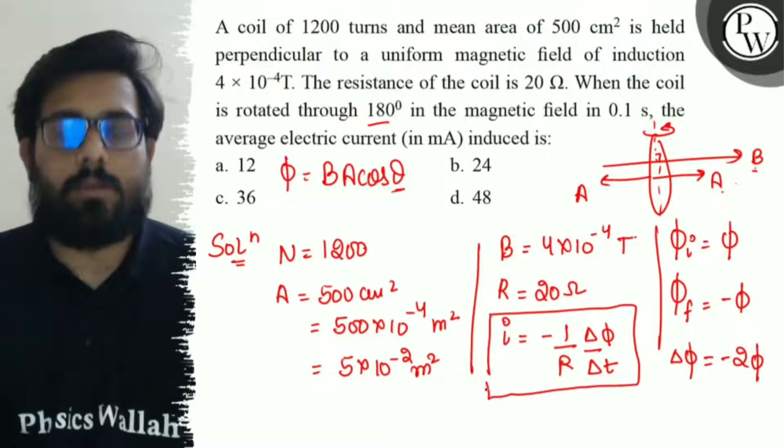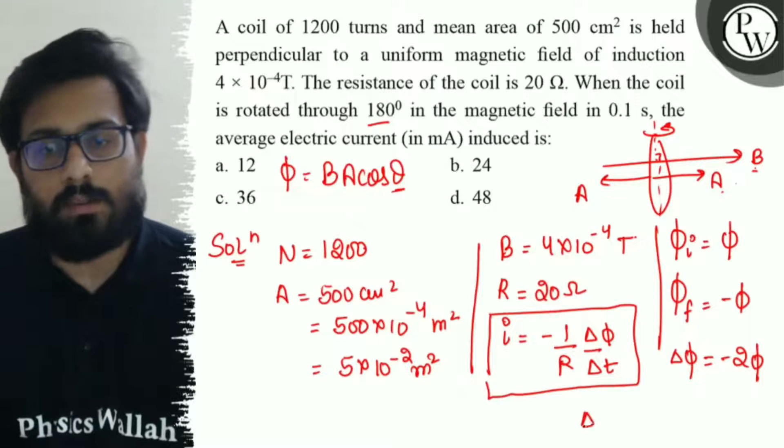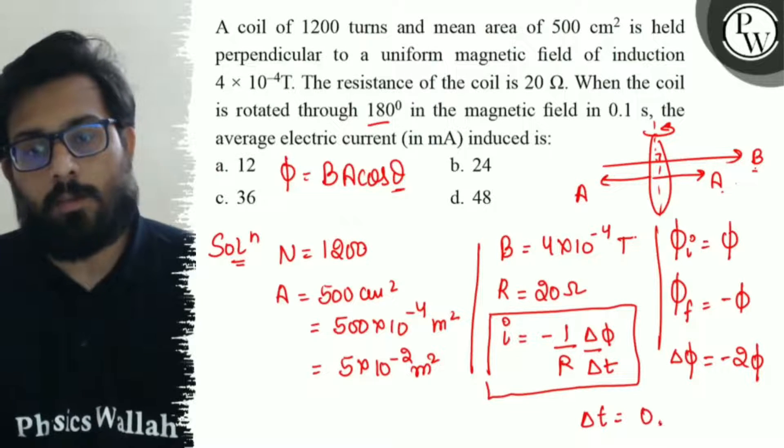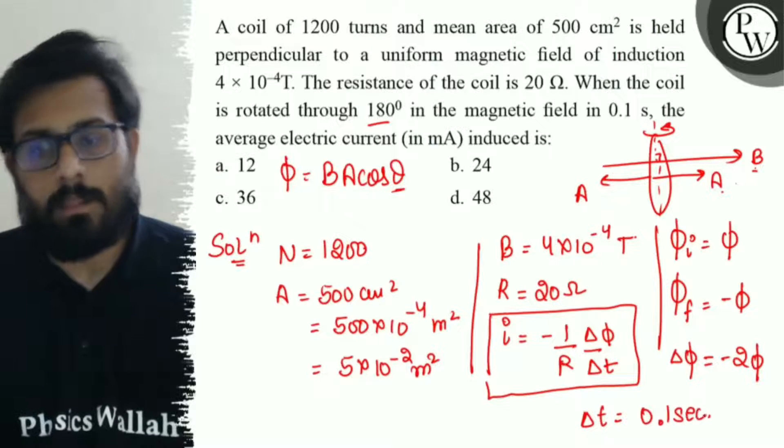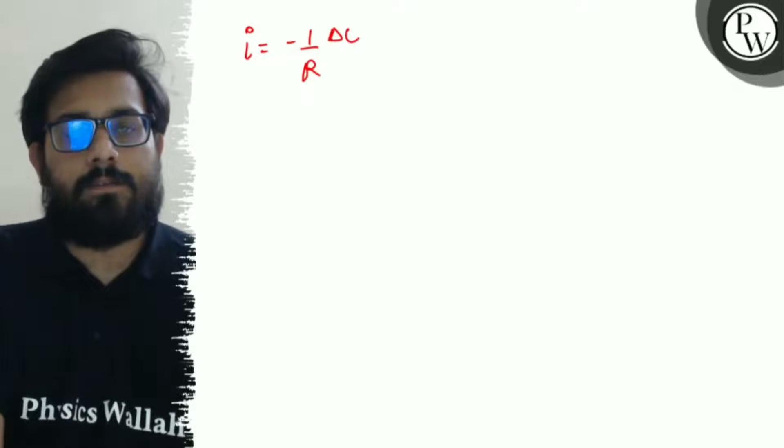The time interval is also given in the question as 0.1 second. So let's move on to the next page: i = -(1/R)(ΔΦ/Δt).